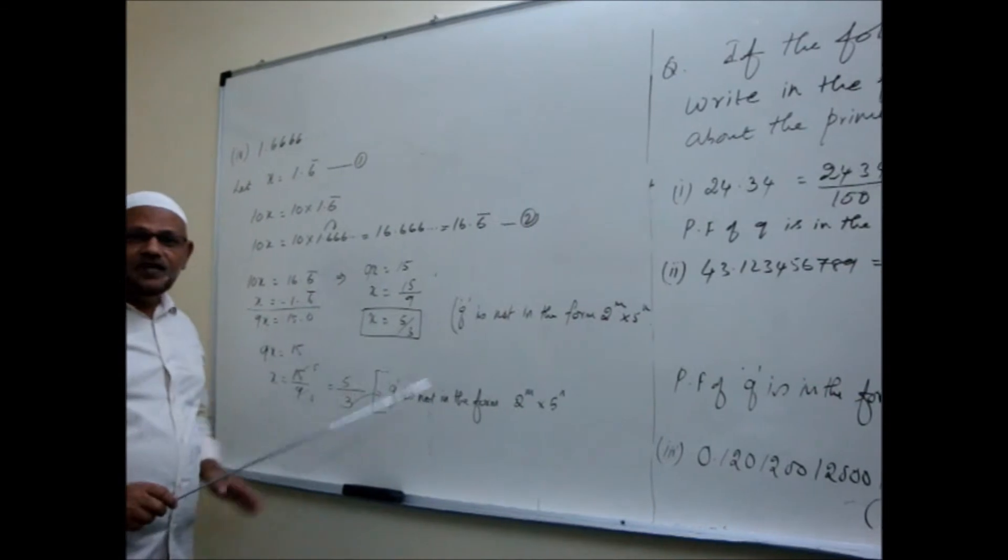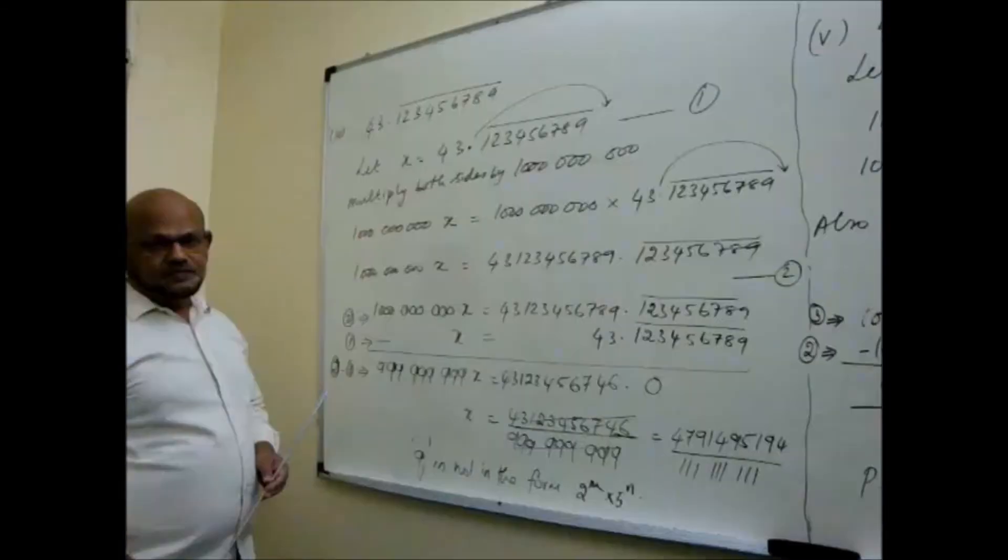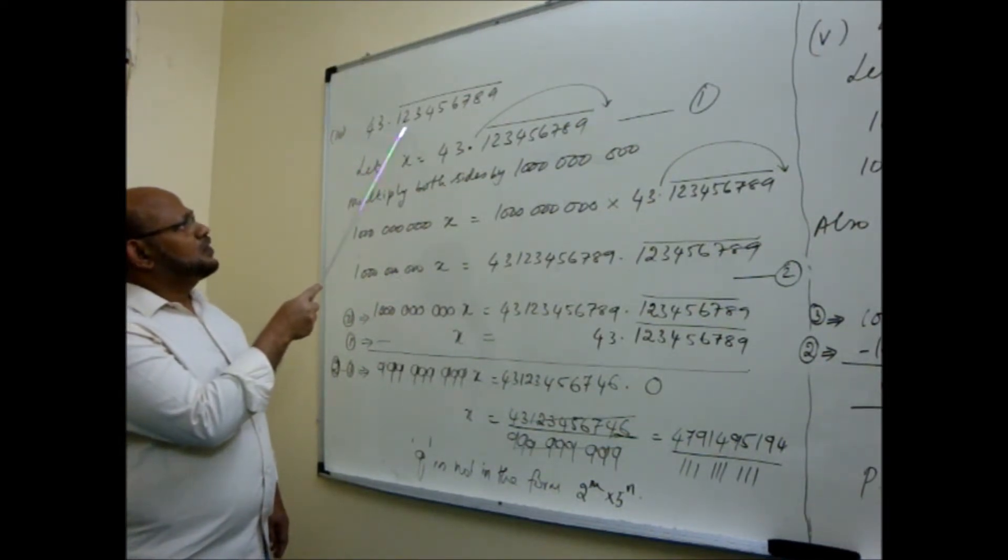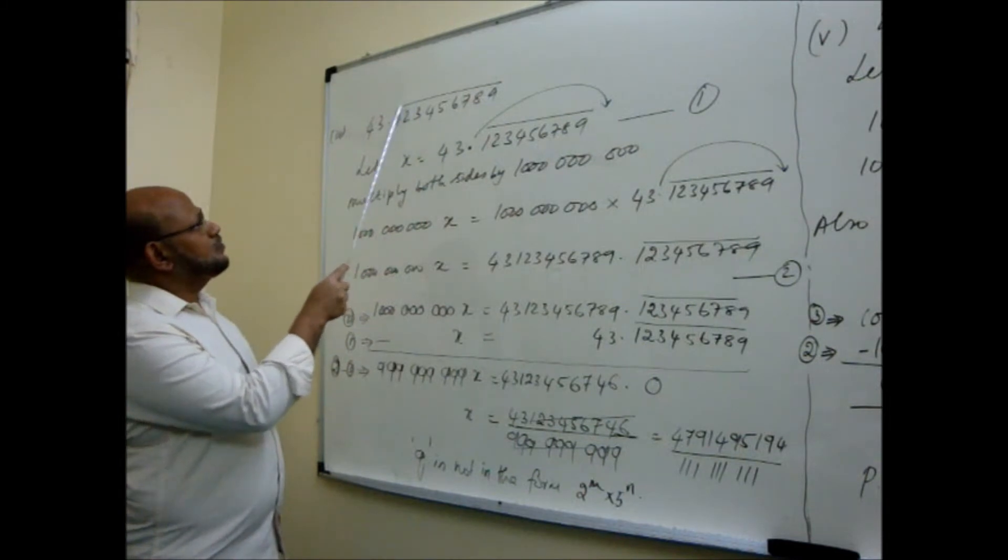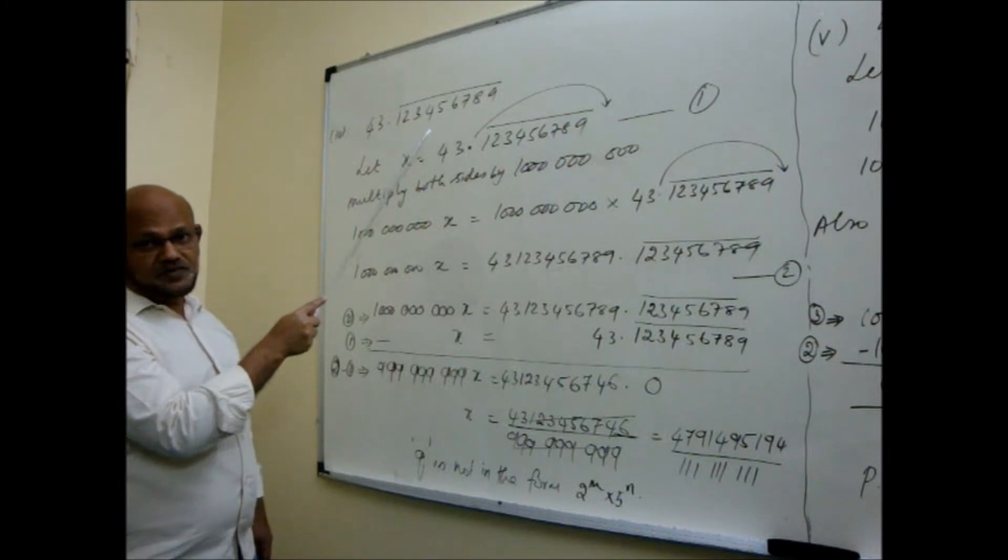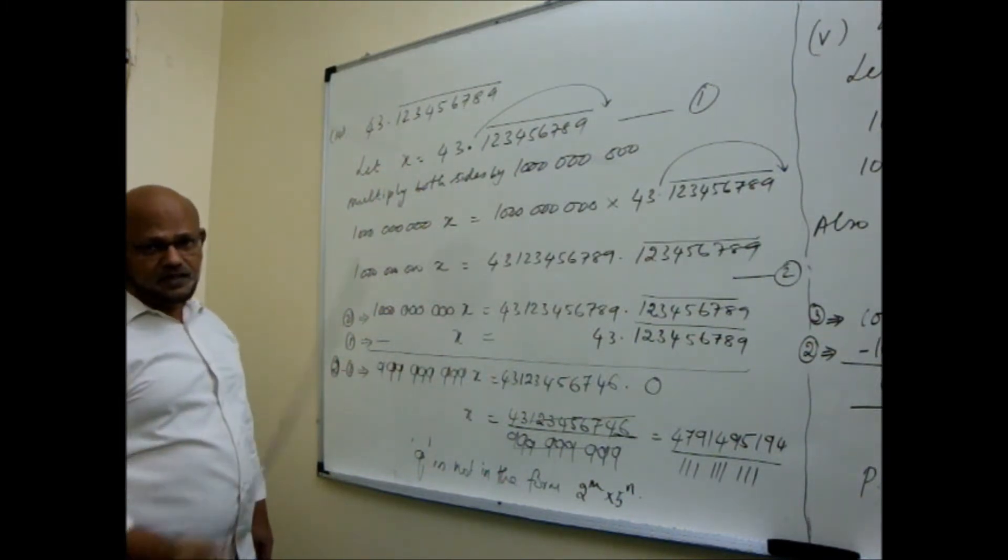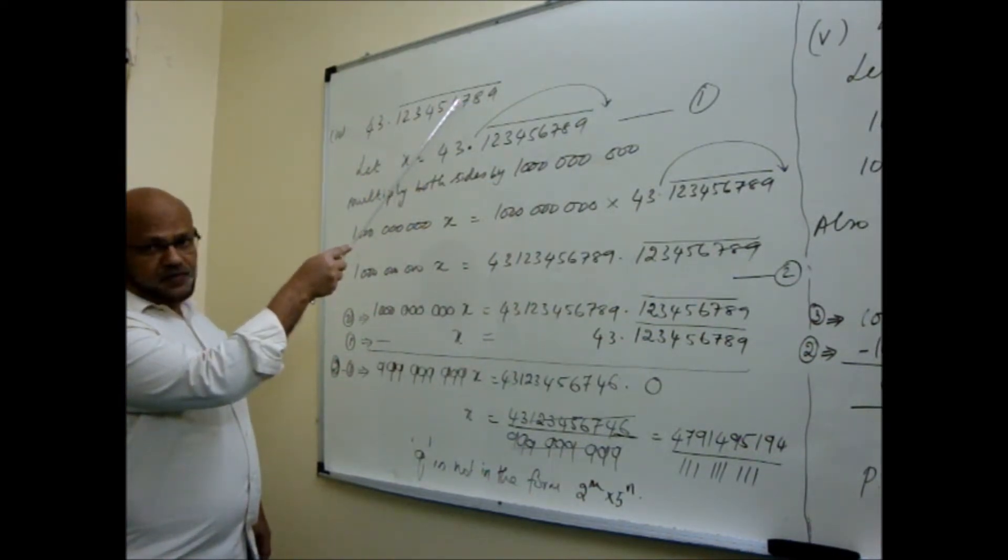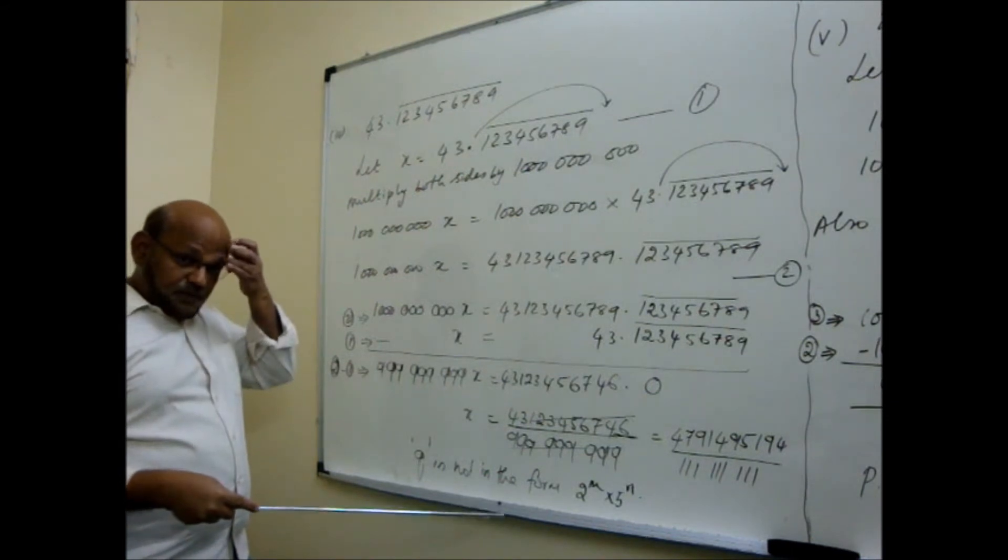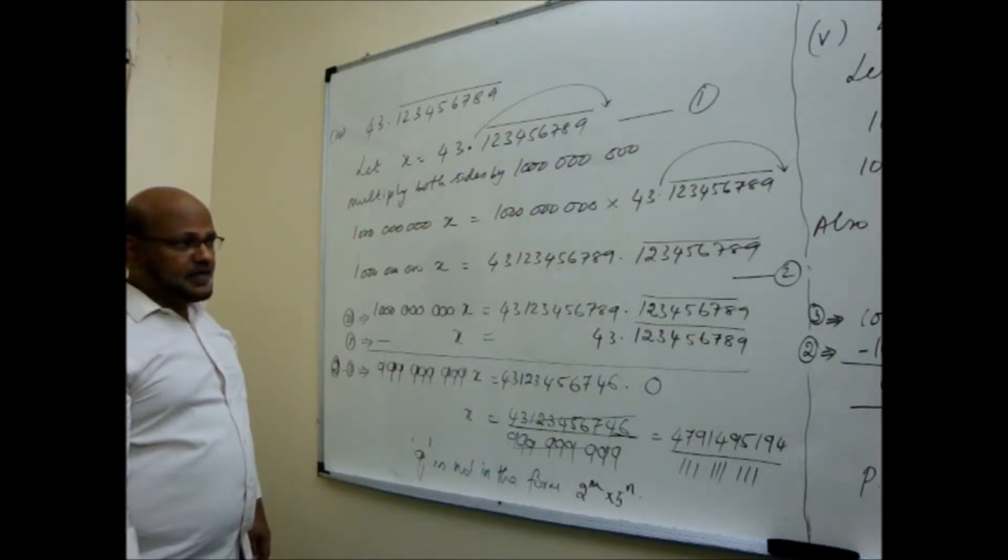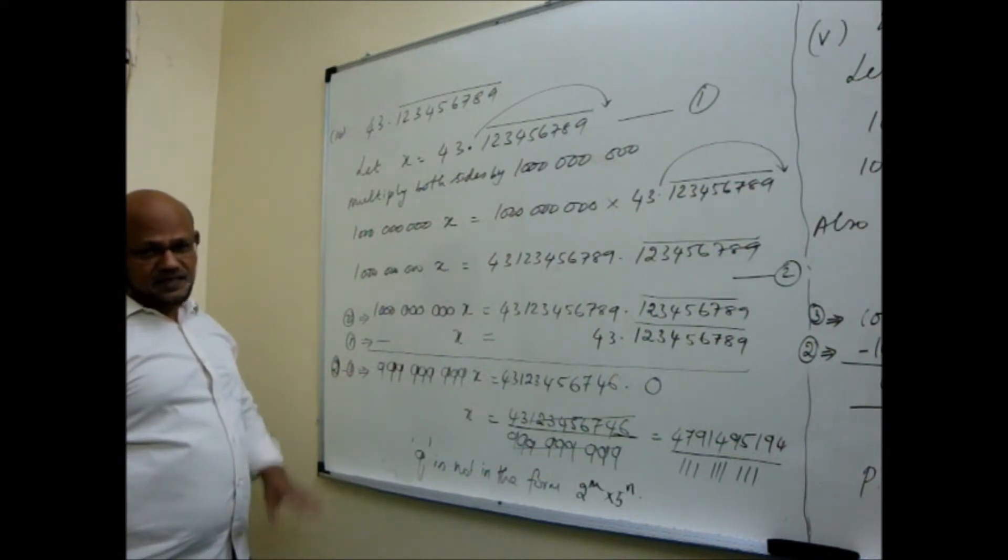Now it came to the form 5 by 3. Just look at this one. Denominator Q, it has only 3. So Q is not in the form 2 to the power m, 5 to the power n. Two, three more examples we see, and that would be the end of this lesson.